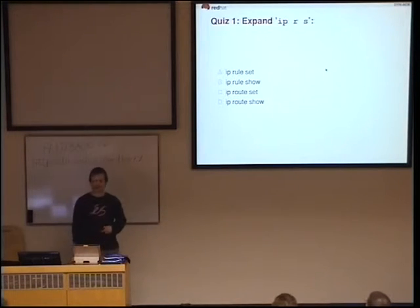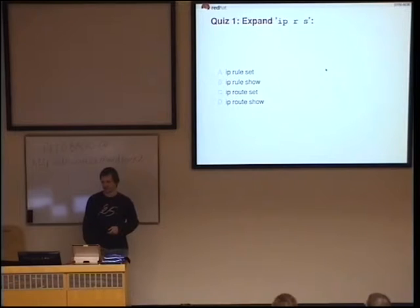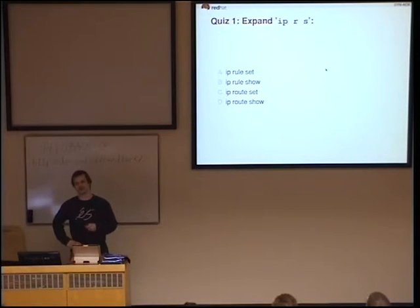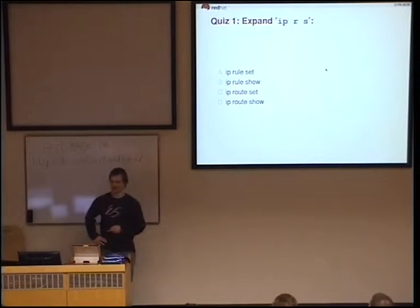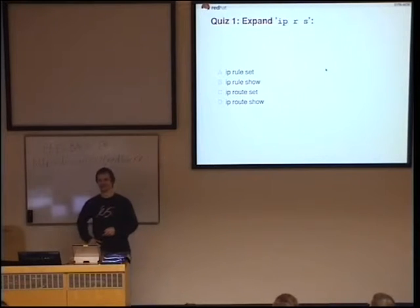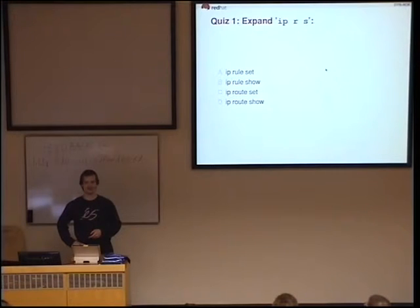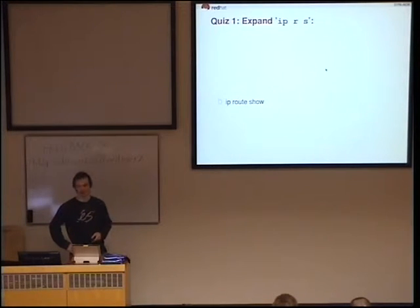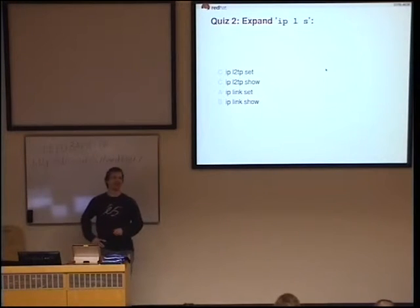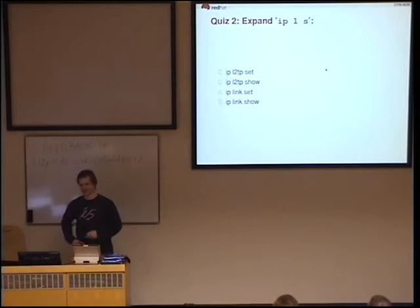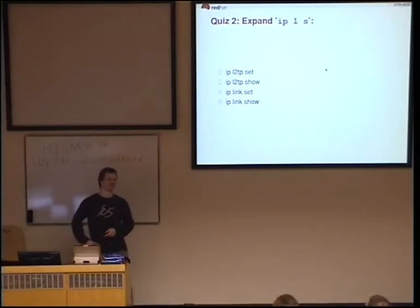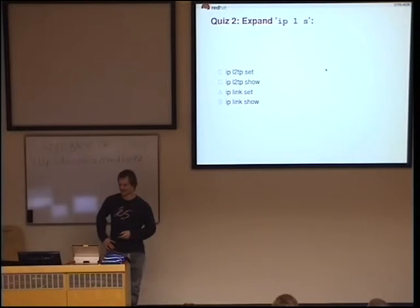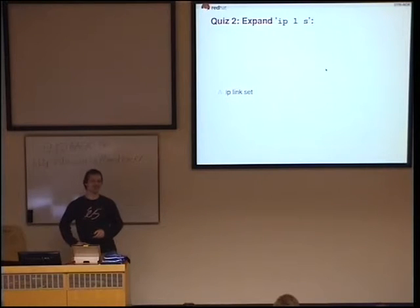To illustrate a bit, I have a number of questions for you. First one: what does 'ip r s' really stand for? We have rule set, rule show, route set, route show. The answer is: it's 'ip route show'. That was pretty obvious. So, next example: 'ip l s'. Is it L2TP set, show, link set, or link show? It's actually 'ip link set' — not exactly what you would expect.